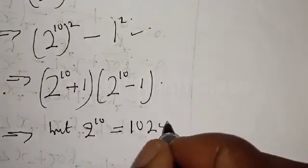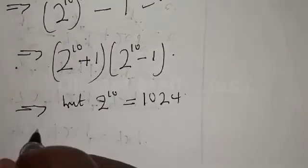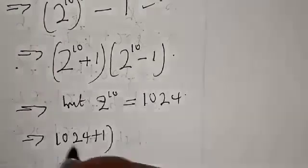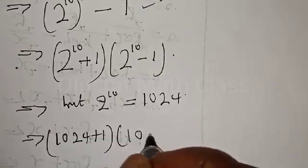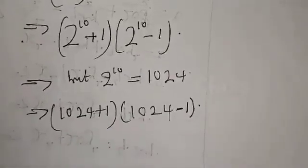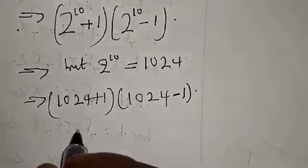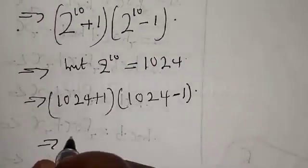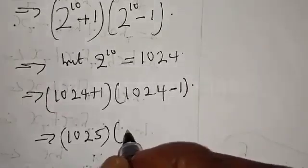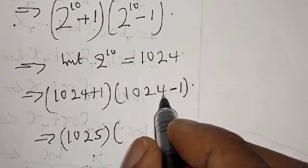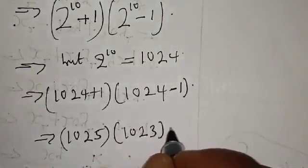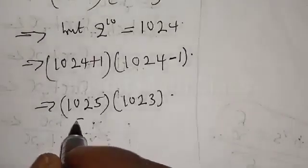Now, 2 raised to power 10 is 1024. This implies that we have 1024 plus one, into 1024 minus one. Then 1024 plus one is 1025, and 1024 minus one is 1023. So we have 1025 into 1023.